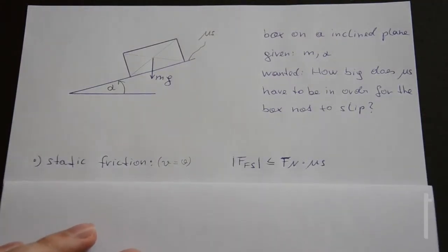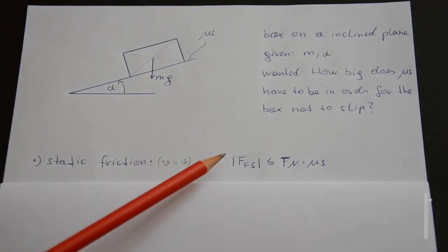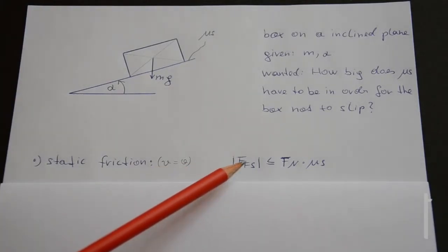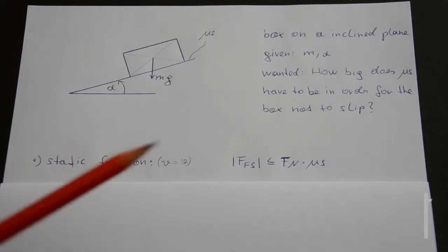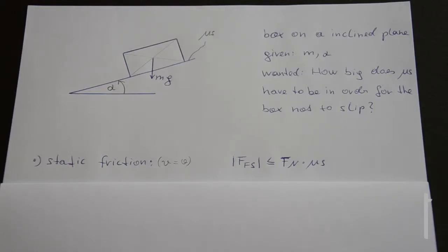The absolute value of the friction force F friction static is less than or equal to Fn times μs. The very important thing is that we have the absolute value of the friction force here. Because we don't know the direction of the friction force at the beginning, we can choose the direction randomly. So should the calculation tell us that the friction force is negative, the absolute value will make it positive again and tells us that the direction of the friction force we assumed was wrong.